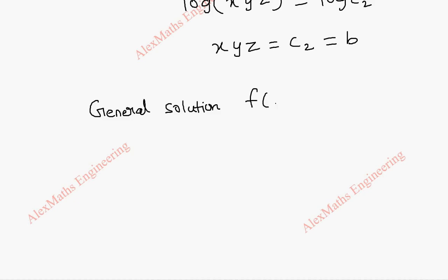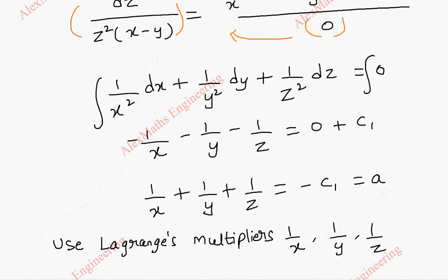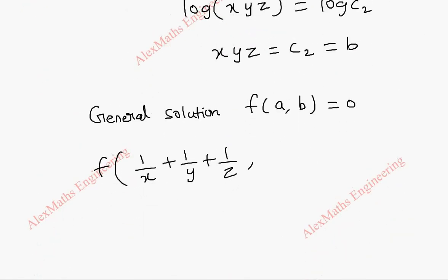After getting constants a and b, we write the general solution. The general solution is of the form f(a, b) = 0, where a = 1/x + 1/y + 1/z and b = xyz. So the general solution for the given partial differential equation using Lagrange's multiplier method is f(1/x + 1/y + 1/z, xyz) = 0.